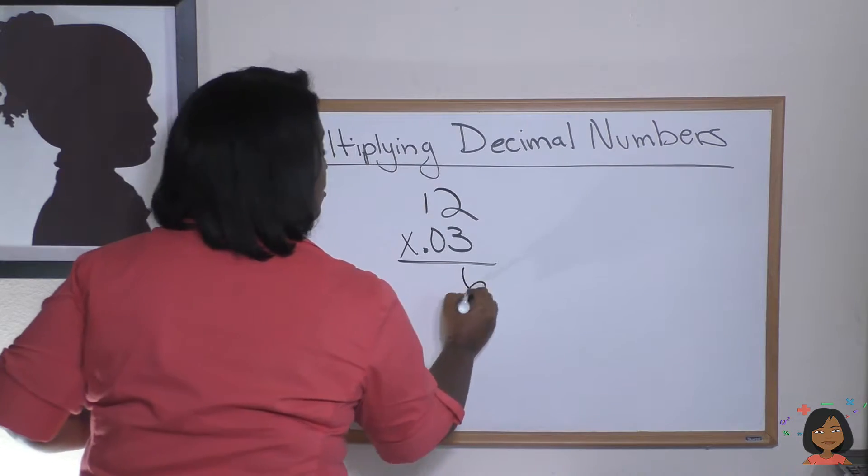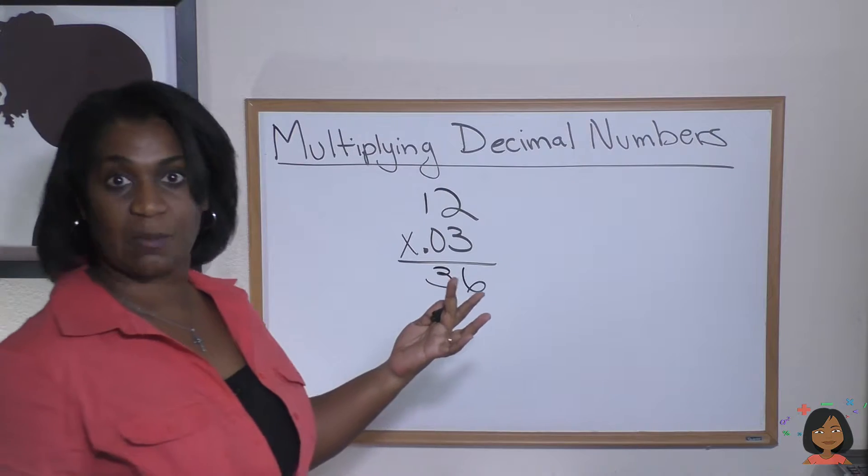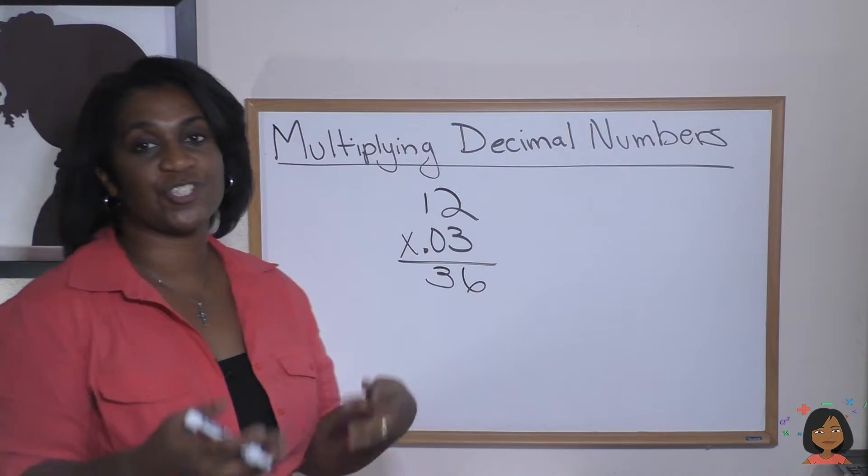Three times two is six. Three times one is three. We don't have to do the zero because we know it's all going to be zero. So we have the answer 36.